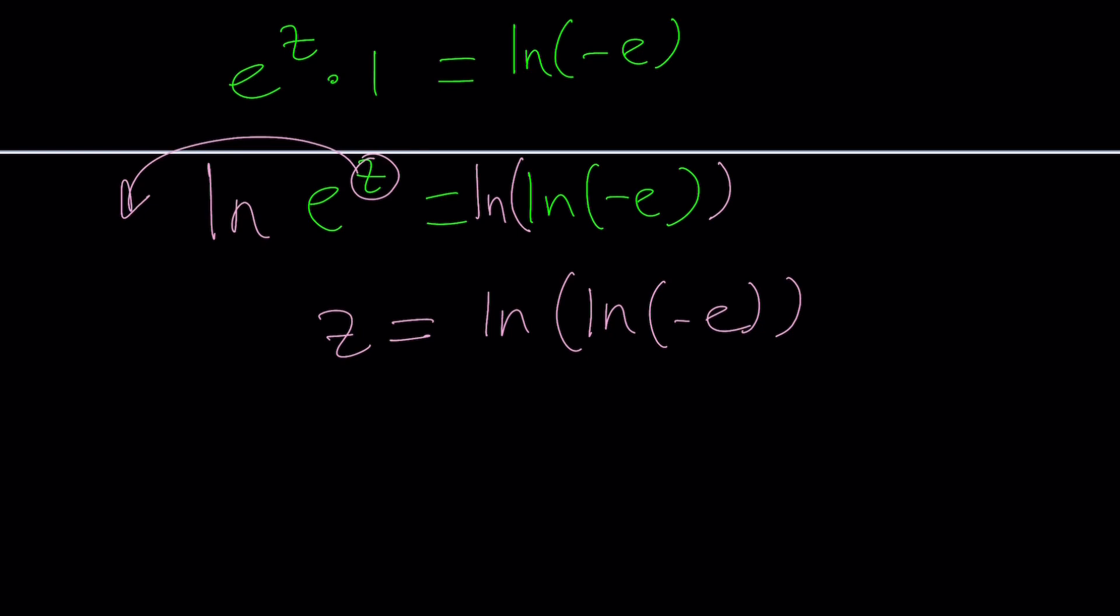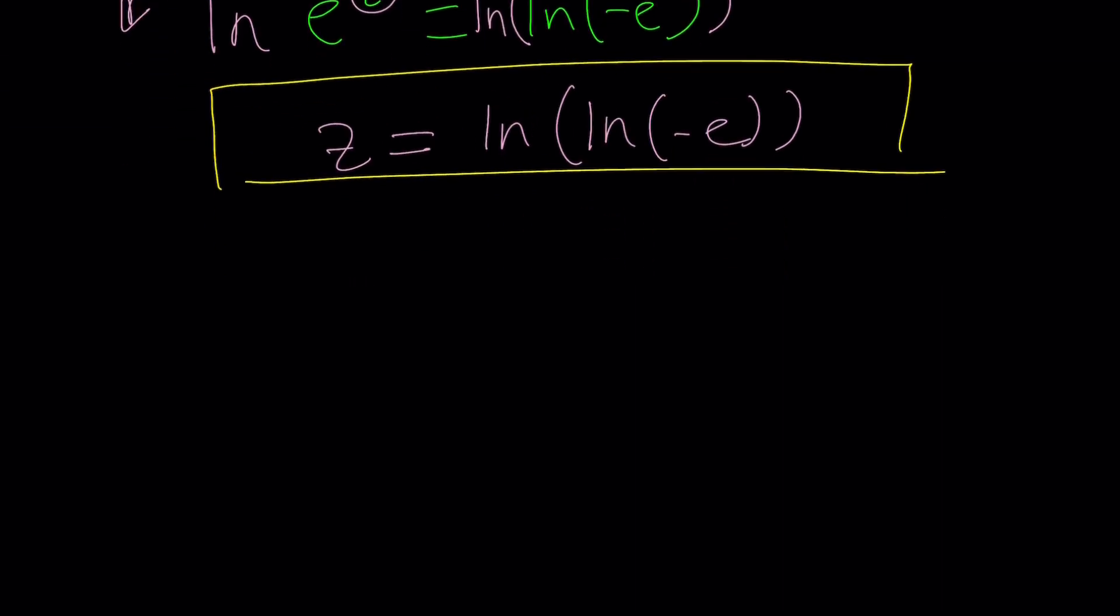So does this work? Sort of it does, but what is ln of negative e? Wait a minute, isn't ln only defined for positive numbers? Yes, that's the real valued ln but we're not talking about the real valued ln here. In the real world ln one is zero, but in the complex world ln one does not always equal to zero. Actually it is equal to 2πni where n is an integer, and if you think about it, one is e to the power 2πni and if you ln it you're going to get that.